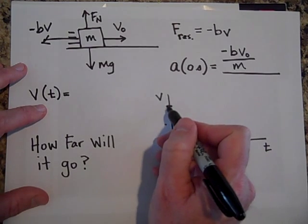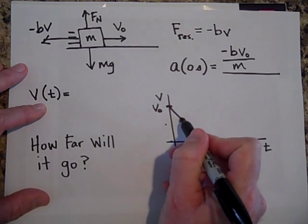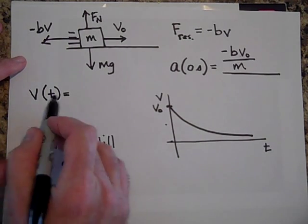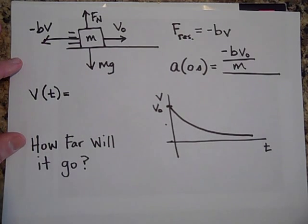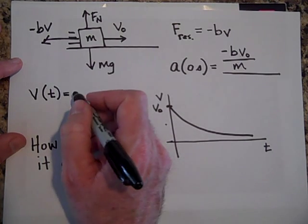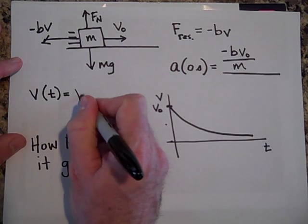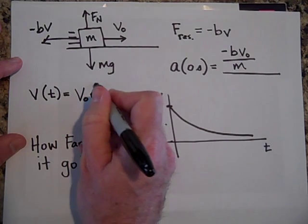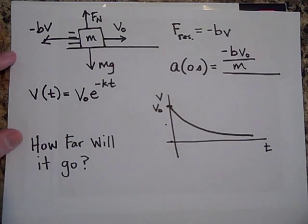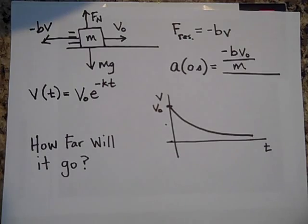The velocity starts out at v-naught and decays to zero. We can guess the function will be v-initial times e to the negative of some constant times t. We need to do a little math to figure out what that constant is.